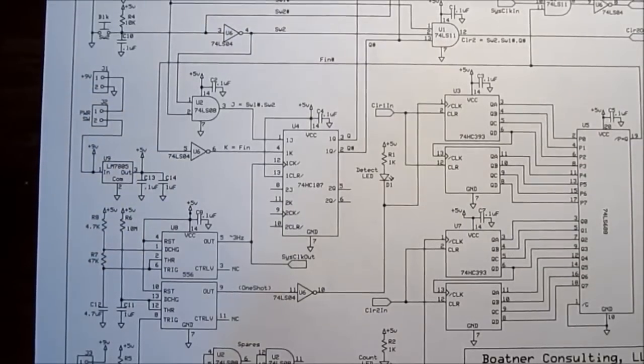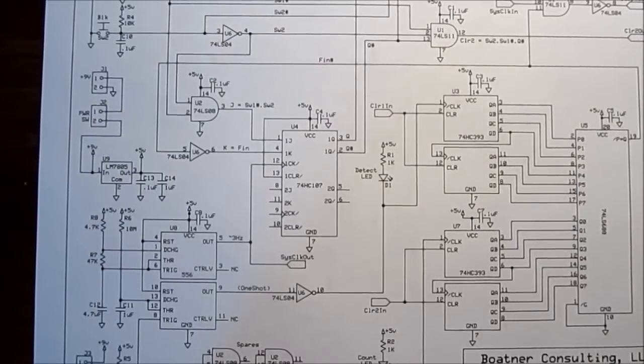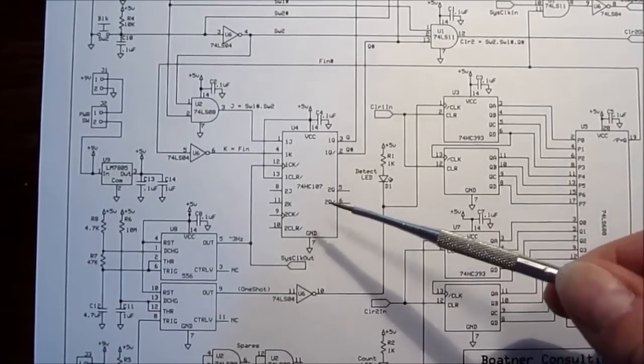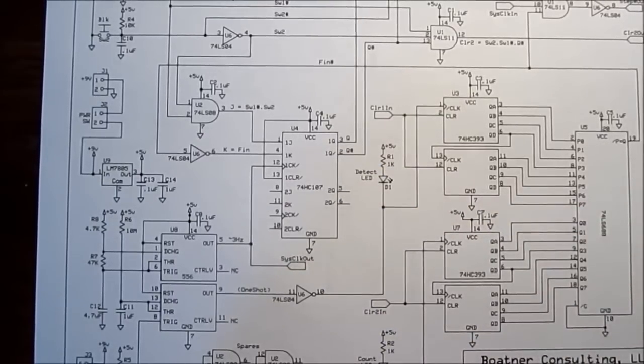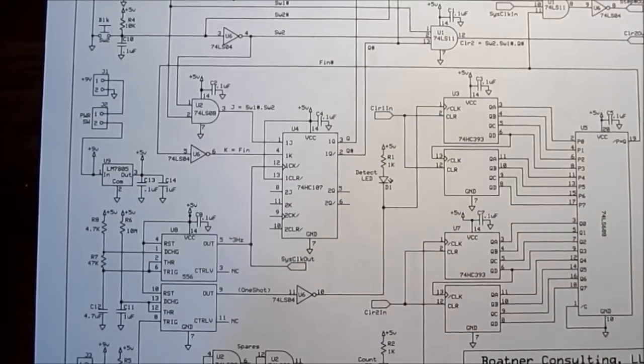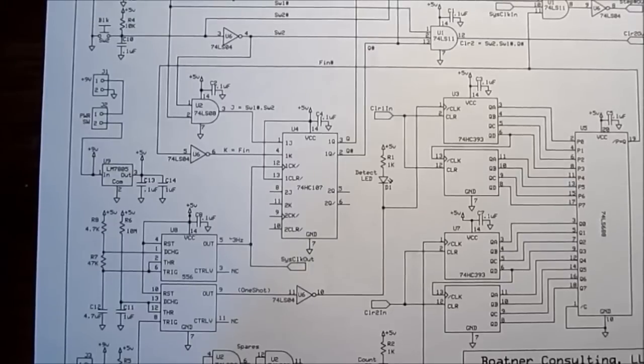So we saw that we had a very, very simple state machine architecture. As a matter of fact, here we have our 107 dual JK flip-flop and we're only using half of it. The other half of the flip-flop chip is not even being used, JK flip-flop number two.